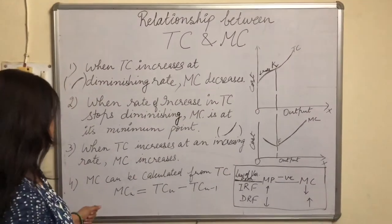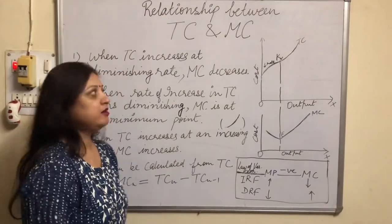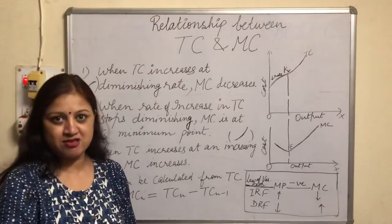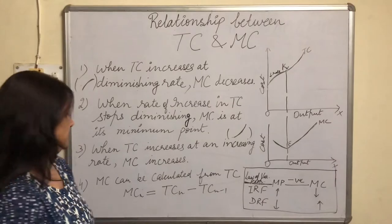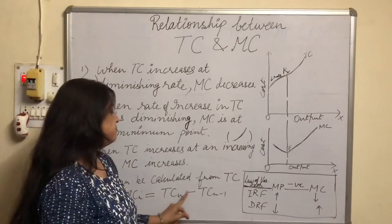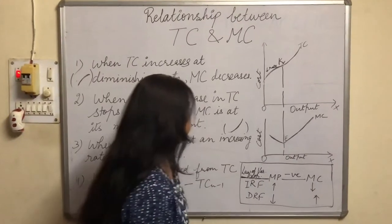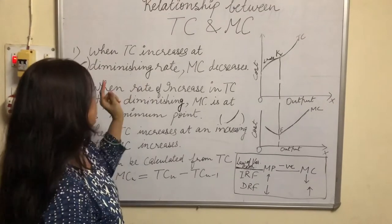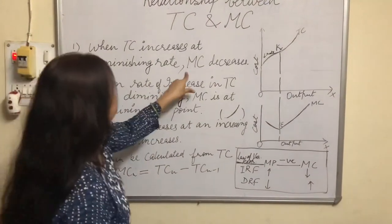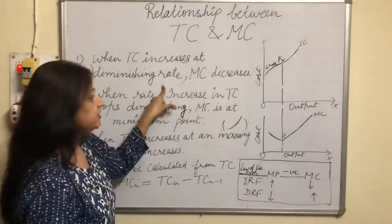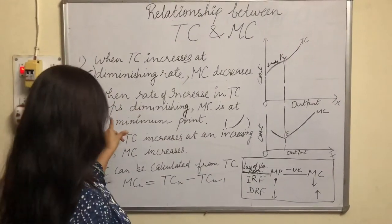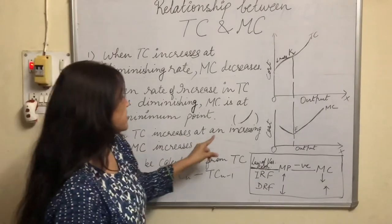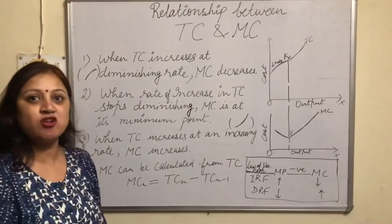The fourth point is that MC can be calculated from TC. The formula is: MC equals TCN minus TC(N-1). If we have TC, we can find MC. If we have MC, we can find TC. So this also comes in the relationship between TC and MC. To summarize: when TC increases at a diminishing rate, MC decreases; when MC is at its minimum point, TC stops increasing at a diminishing rate; when MC increases, TC increases at an increasing rate. These points can also be stated in reverse.